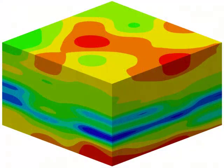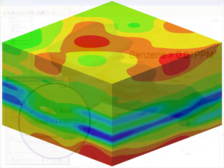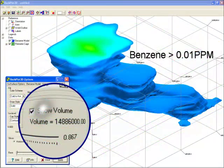The next step is to use the Rockworks modeling capabilities to generate a block model based on these benzene values. By filtering the model values based on a user-defined threshold, we can see the shape of the plume as well as the volume.